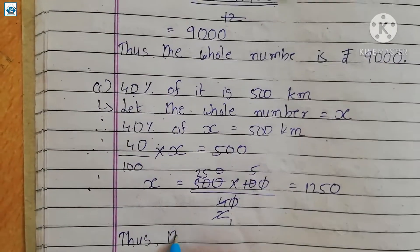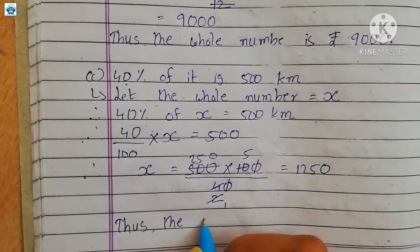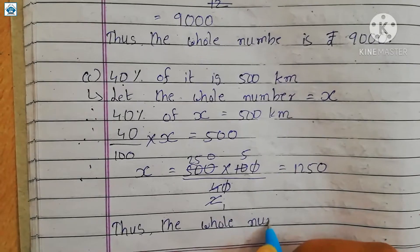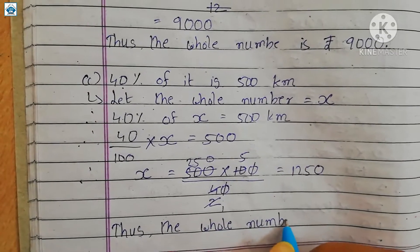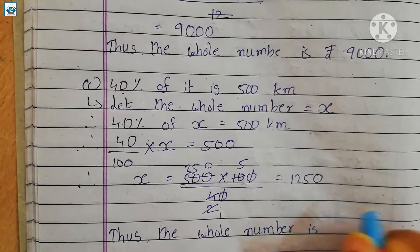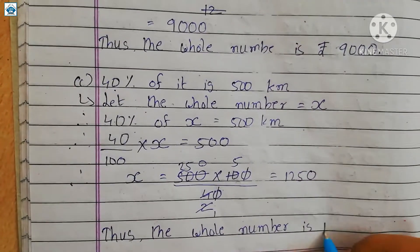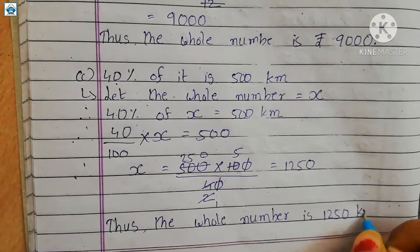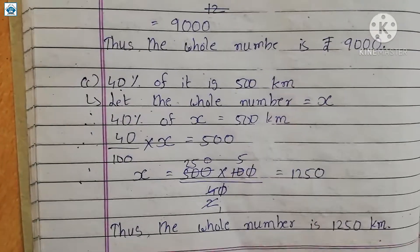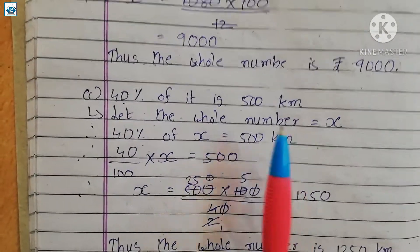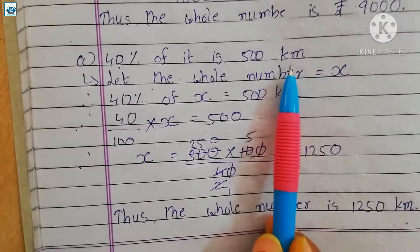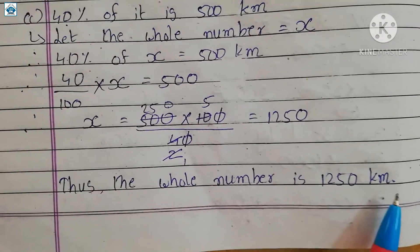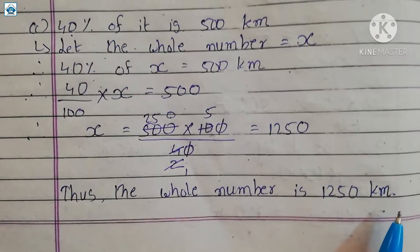So in the last we write down: thus the whole number is 1250 kilometers, because the measurement given was in kilometers. So that is why we write 1250 kilometers.